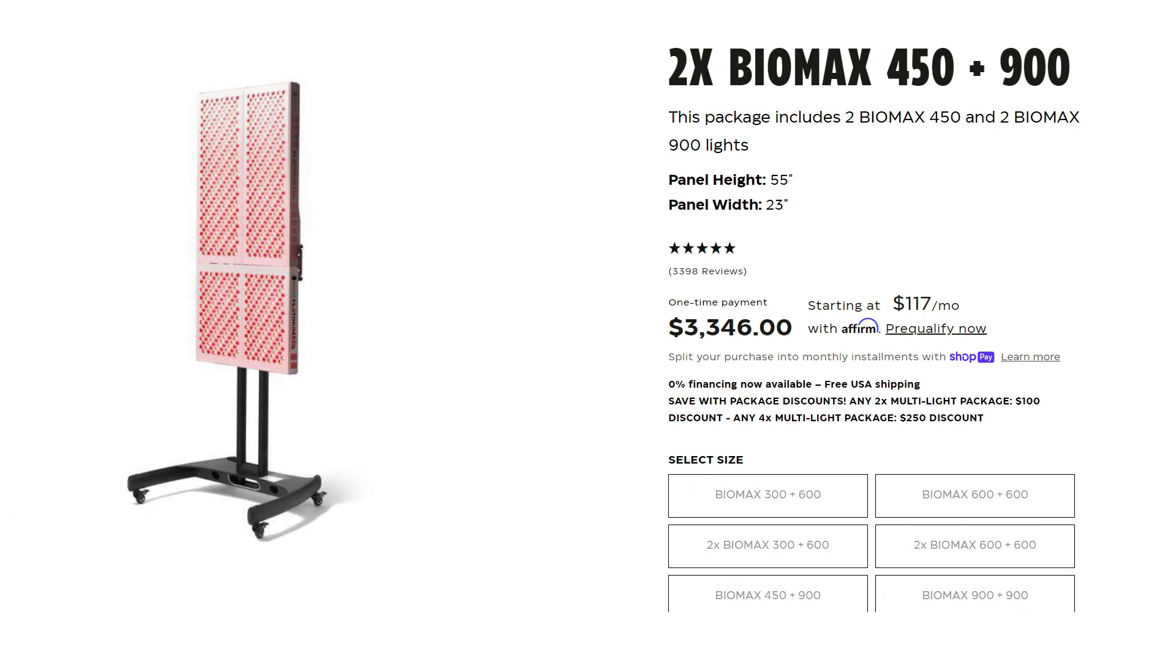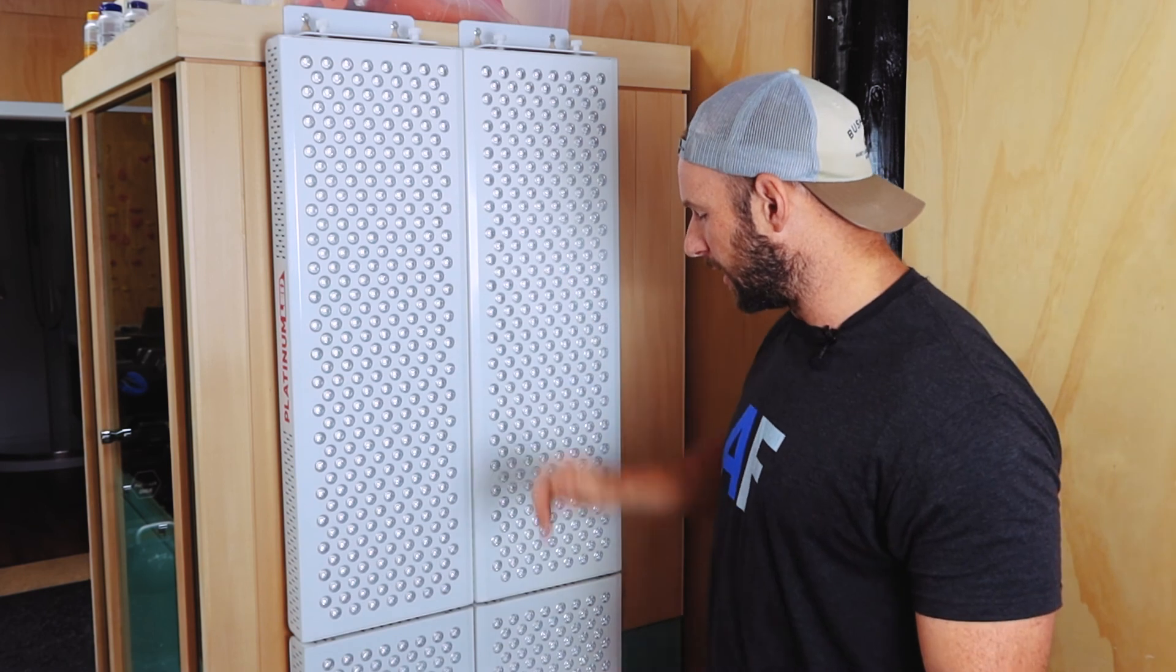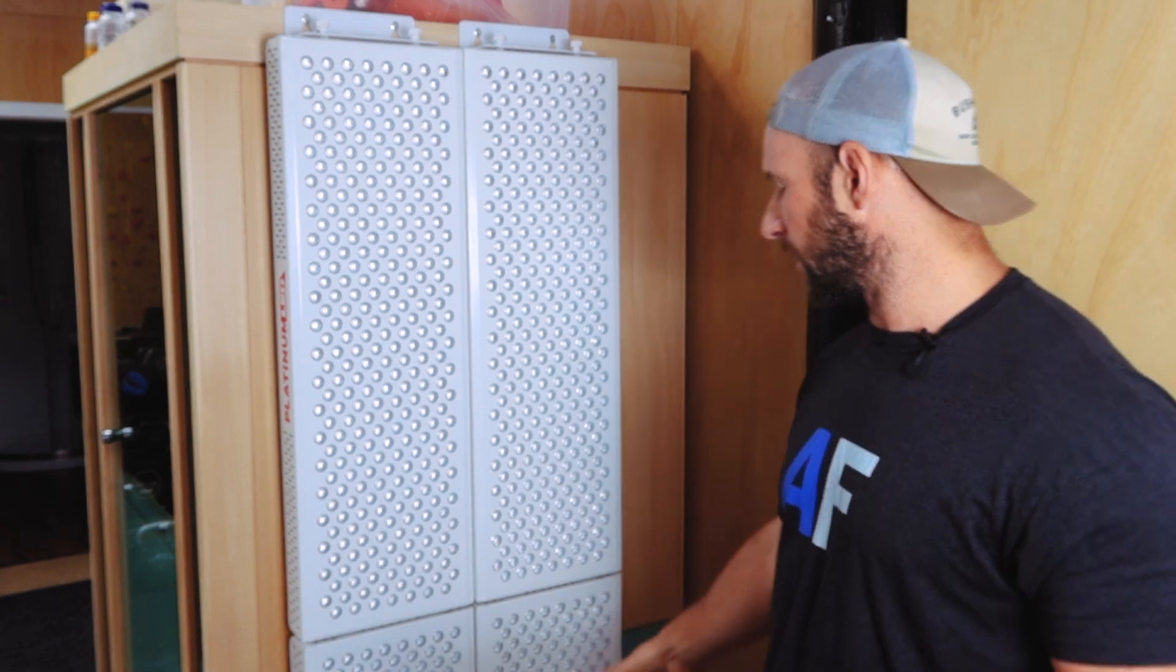Or you could get two 900s and two Biomax 450s. You get the two feet width across, but you're not getting the same six feet length. You're probably down to about four and a half feet. Again, though, that's $900 cheaper. I think if you're spending three grand, spend the extra $900 and get a full setup like this.